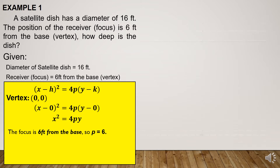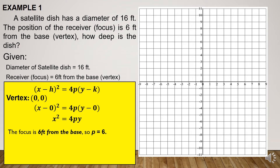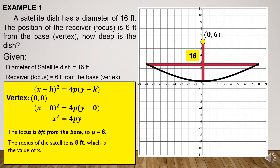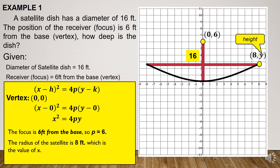Let us now illustrate this in the Cartesian plane. The distance of the focus from the vertex is 6. Therefore, the coordinates of the focus are (0, 6). Since the diameter of the satellite dish is 16 feet, the radius is 8 feet, which is the value of x. So one of the endpoints of the diameter is (8, y), where y is the height of the dish.